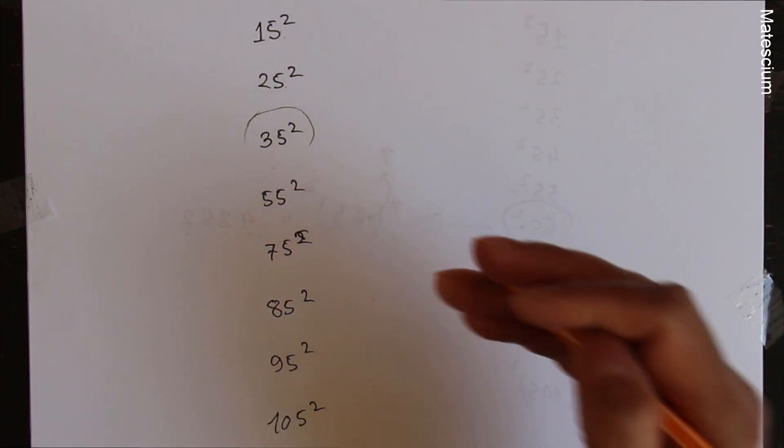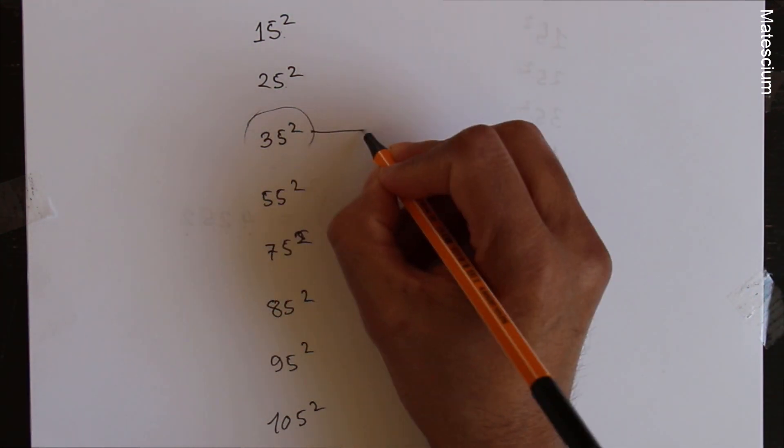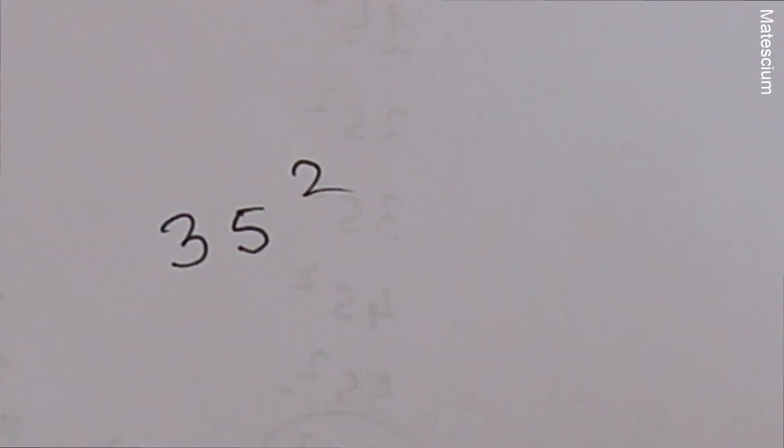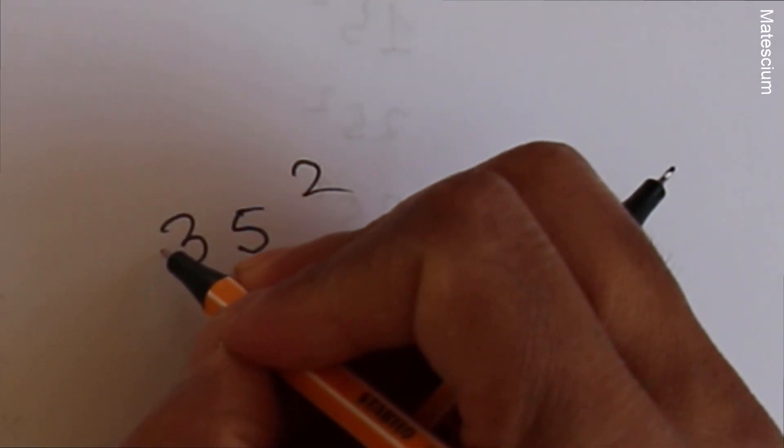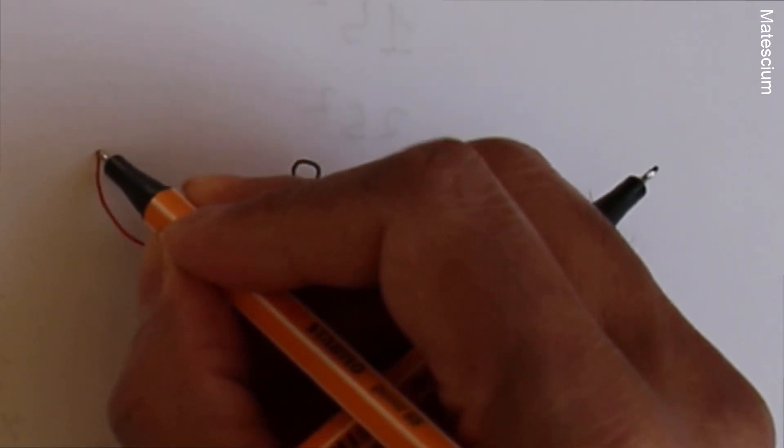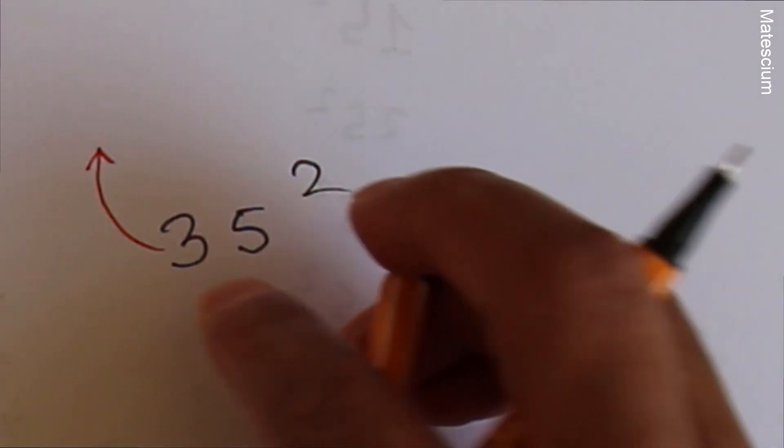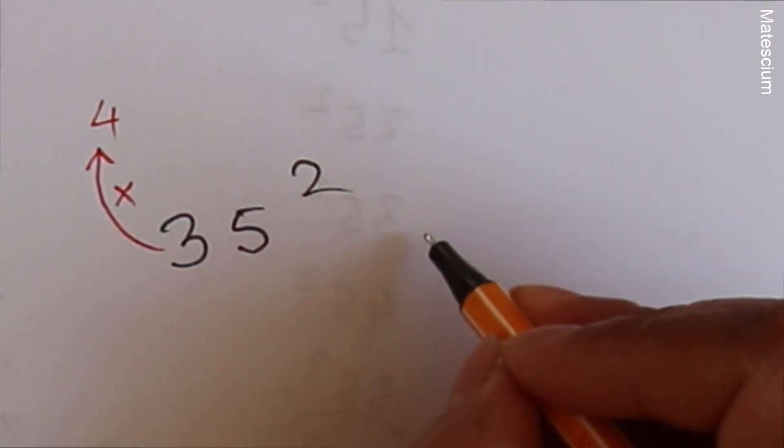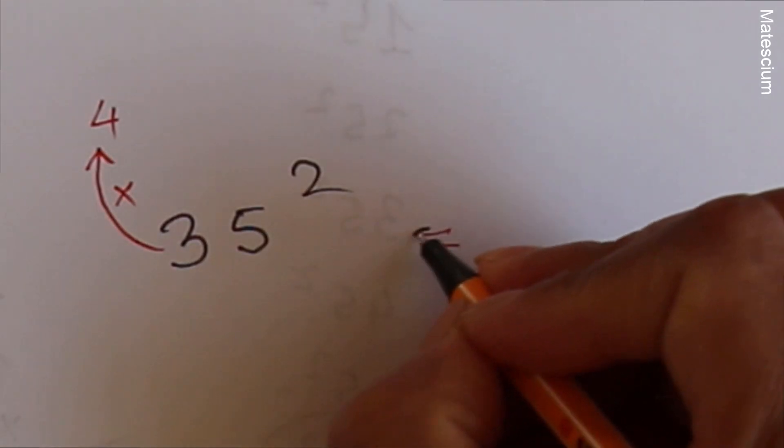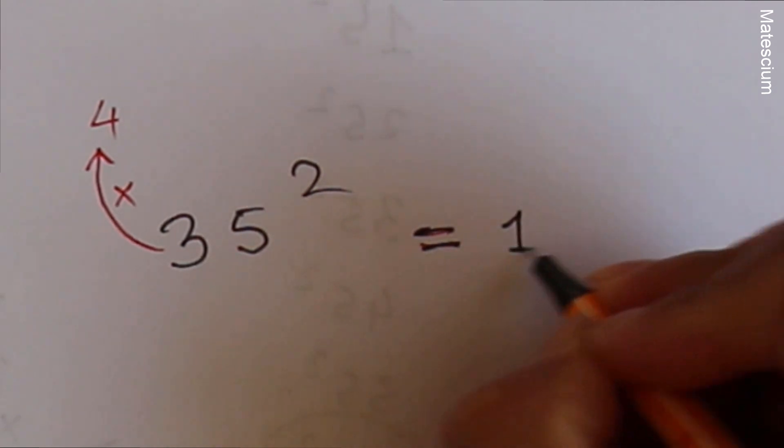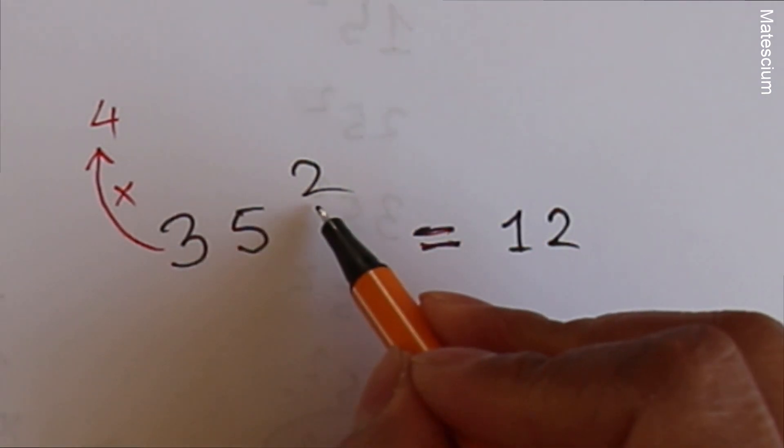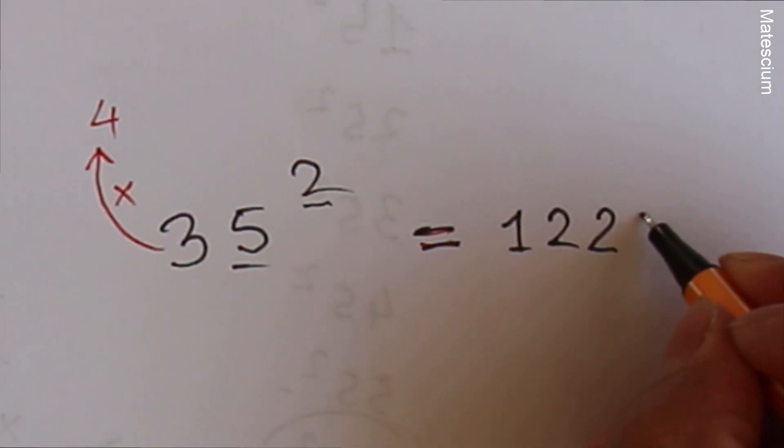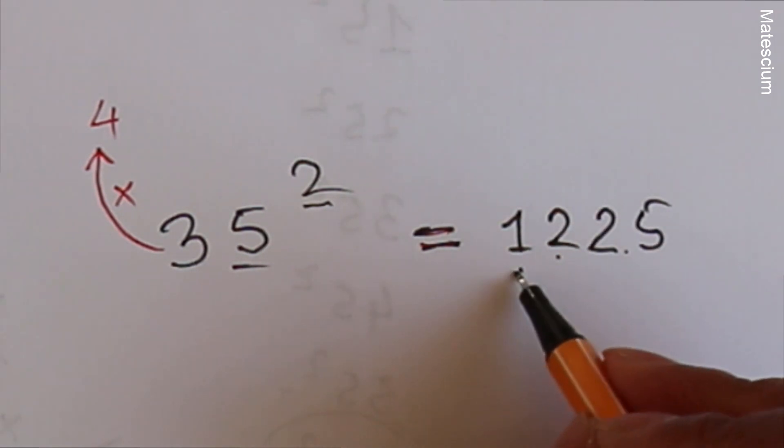I have very simple unique tricks. Let us consider any number. Let's say 35². How to calculate this 35² without any memorization? So consider 35². Now what you have to do: you have to consider the exactly immediate next number of this 3. Next number of 3 is 4. And then multiply these 2 numbers: 3 times 4 is 12. And then you have to write 5² as 25 here. That means 1225 is the answer.